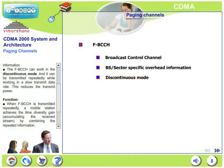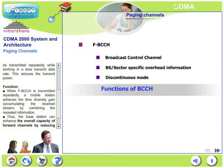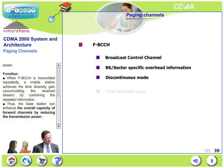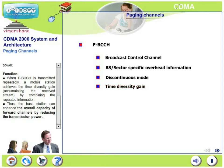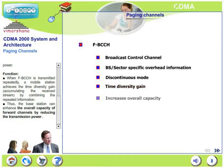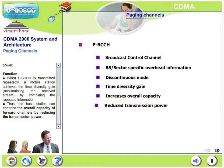This reduces the transmit power. When BCCH is transmitted repeatedly, a mobile station achieves time diversity gain by accumulating the received stream — combining the repeated information it receives and adding it to what was previously received. This accumulation is known as time diversity gain. Thus, the base station can enhance the overall capacity of forward channels by reducing the transmission power.